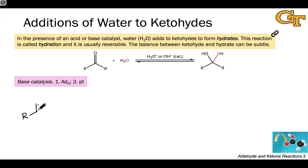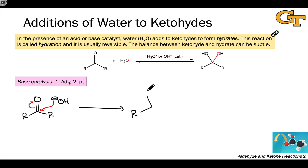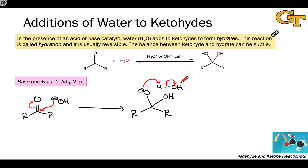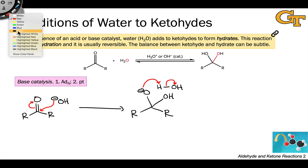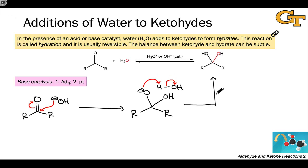Under base catalysis, the situation is a little simpler. If we imagine the base catalyst being hydroxide itself, the nucleophilic addition of hydroxide to the carbonyl carbon generates an anionic hydrate — the conjugate base of a hydrate directly. After nucleophilic addition, protonation of the anionic oxygen regenerates the hydroxide catalyst and generates the hydrate product.